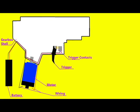Next is the trigger and trigger contacts. When the trigger is pulled, the trigger contacts touch and align for the electrical circuit to be completed. Once completed, the motor receives the electricity and spins its pinion gear counterclockwise.